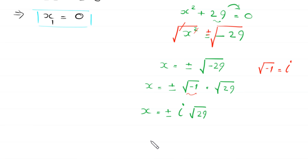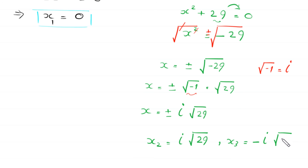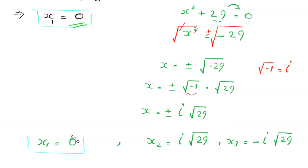From Case 2 we get x₂ = i√29 and x₃ = -i√29. Combined with x₁ = 0, this equation has three solutions: x = 0, x = i√29, and x = -i√29.